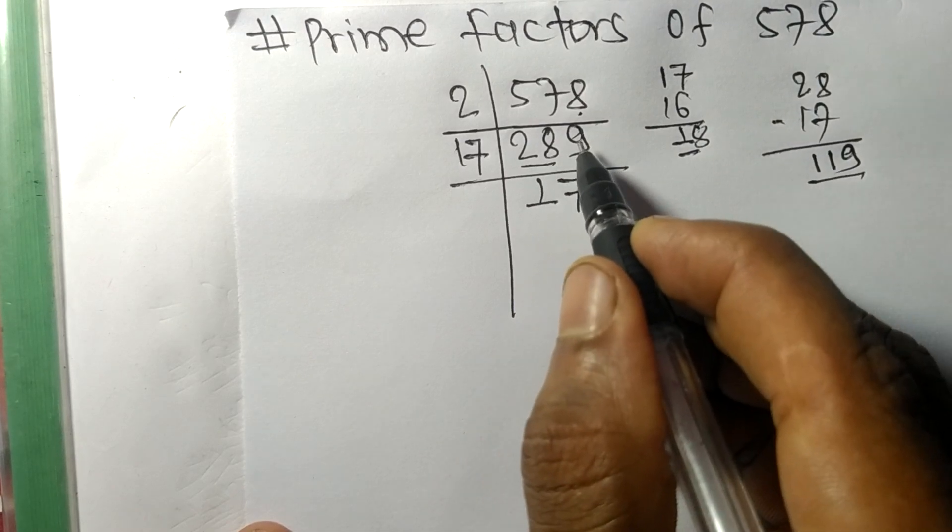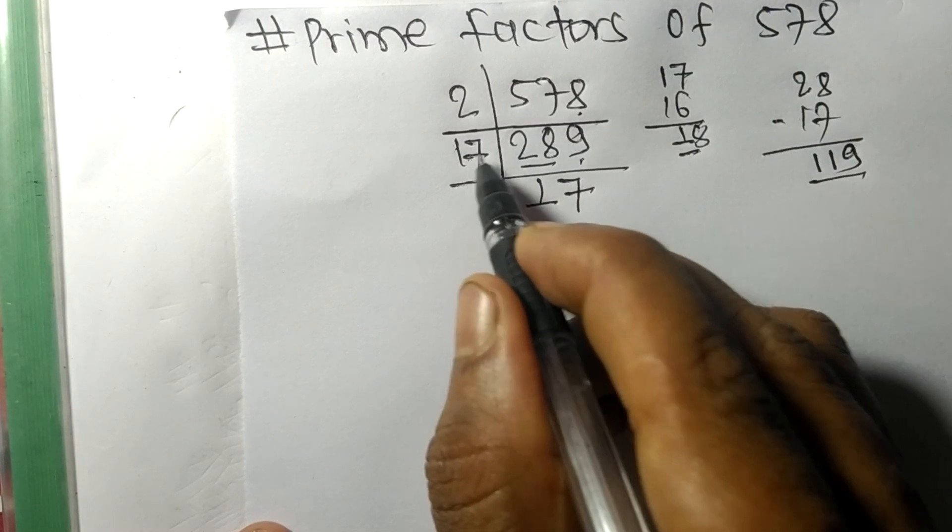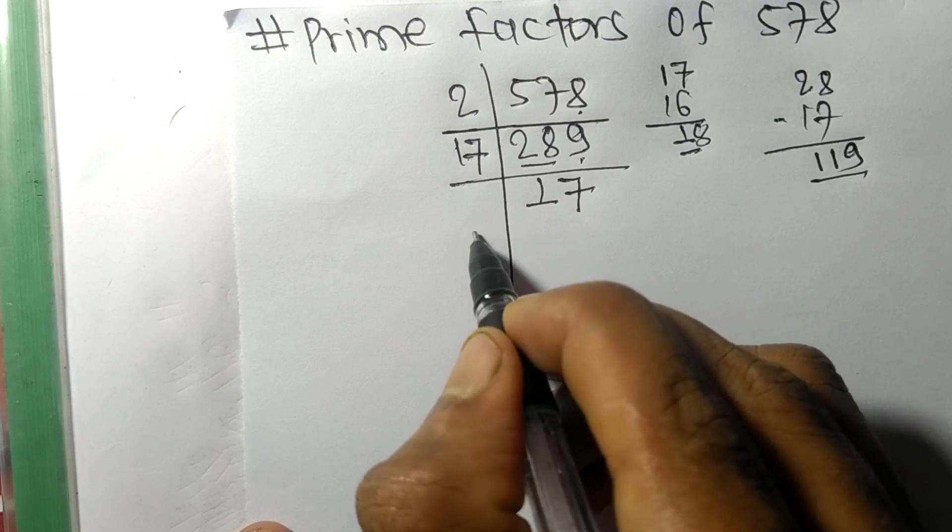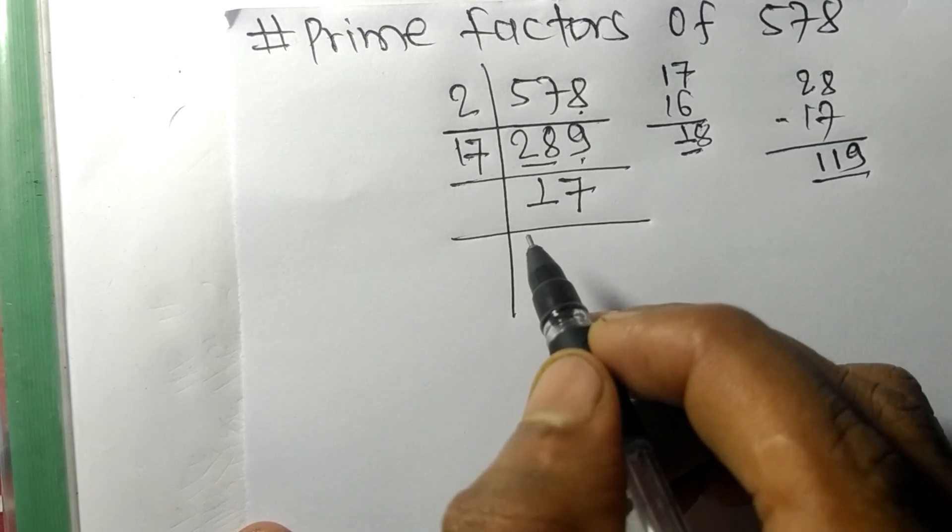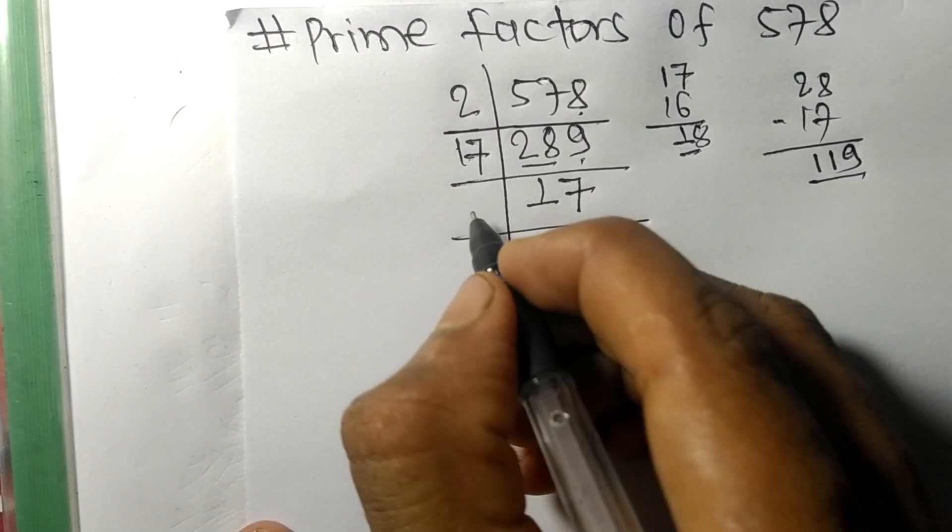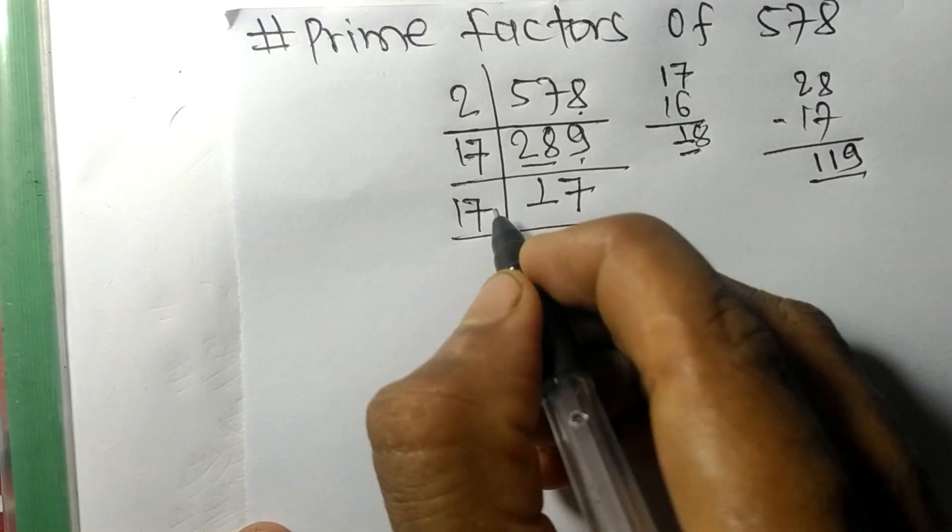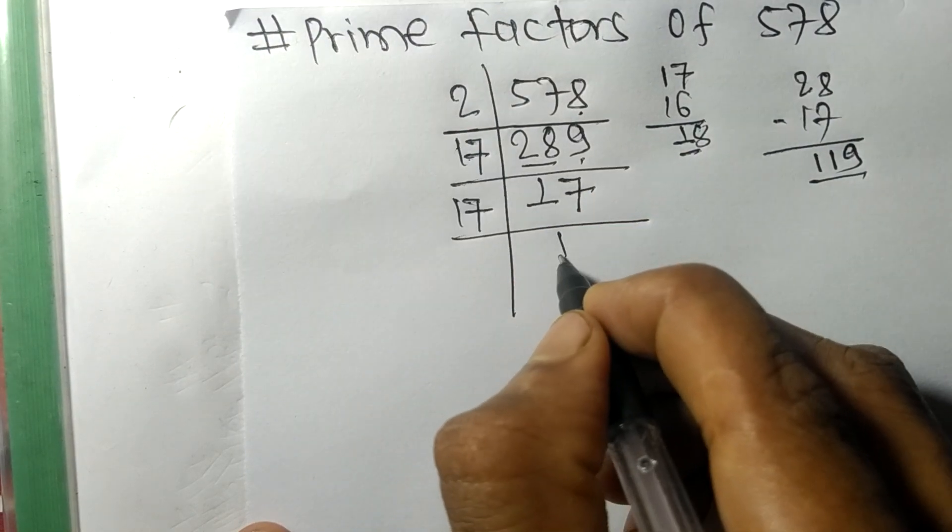So 289 on dividing with 17 we got 17. Now 17 is a prime number, so it is divisible by 17 itself and we get here 1.